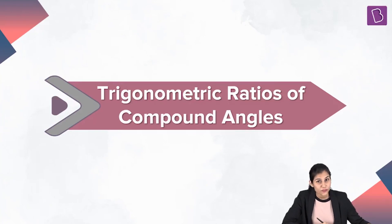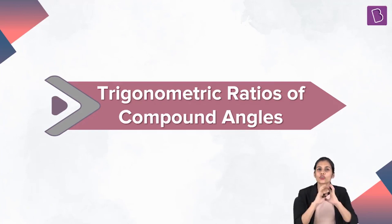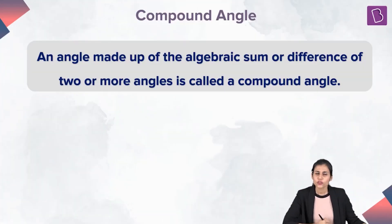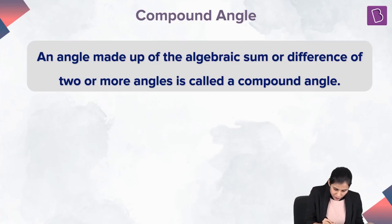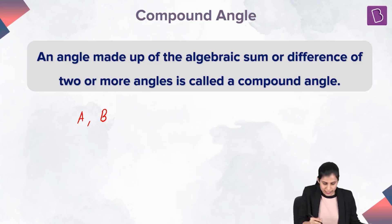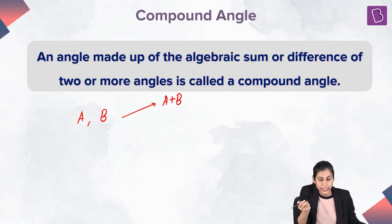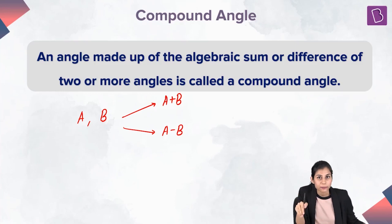It's time to start with a fresh new topic which is Trigonometric Ratios of Compound Angles. Now what is a compound angle? Basically, a combination of two angles or three angles or finitely many angles is called a compound angle. So if you add or subtract two or more angles you end up getting a compound angle. For example, if A and B are two angles then A plus B is a compound angle, and also A minus B is a compound angle formed by A and B.